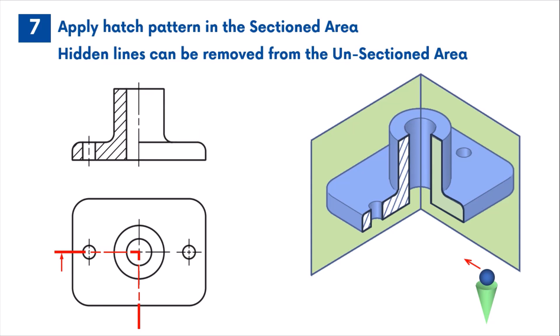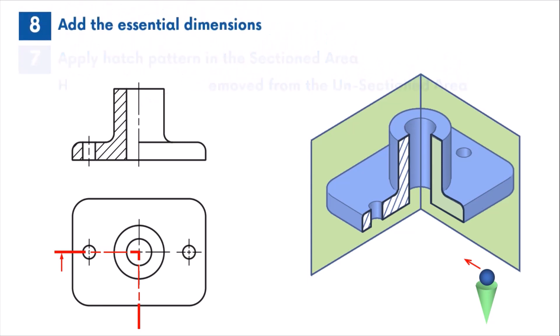A center line is used to separate the two halves from each other. The final step is to add the essential dimensions to the drawing.